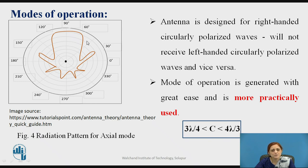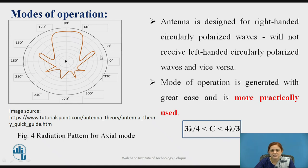For proper radiation in the axial mode, the circumference of the helix should be greater than 3λ/4 and less than 4λ/3. So the condition for proper radiation is that the circumference should lie between 3λ/4 and 4λ/3.